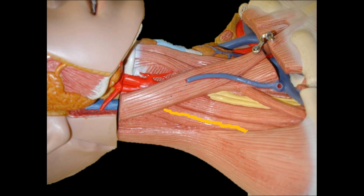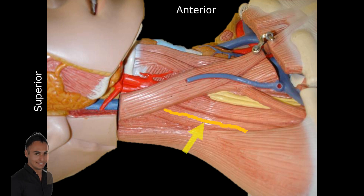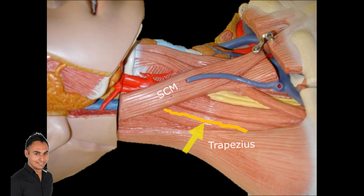We're looking at the neck from the side. Here is the anterior and that is the superior. The muscle here is the sternocleidomastoid muscle, and here I can see the border of trapezius. Can you identify this nerve? This is SCM and this is trapezius, and the nerve is between them.